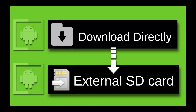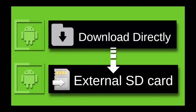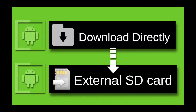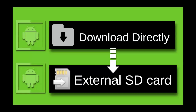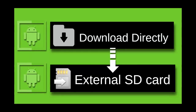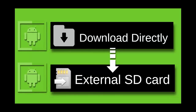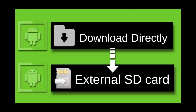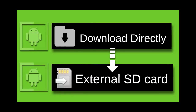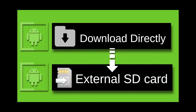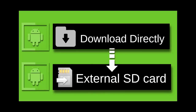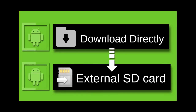We can download directly to external SD card by mobile browser. Before, it worked on Google Chrome browser, but nowadays it's not working on it. So here I will show you how you can change the default download location to external SD card through UC browser.